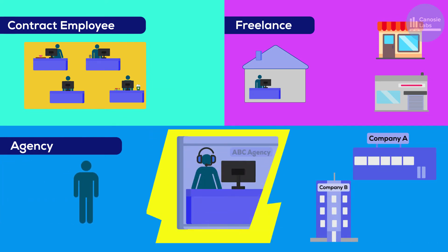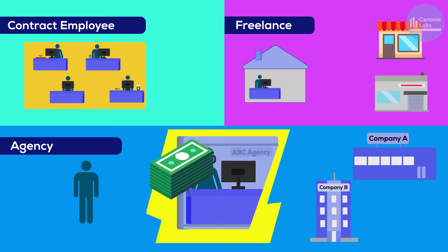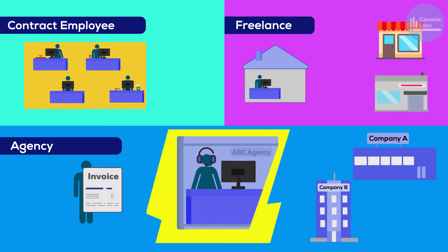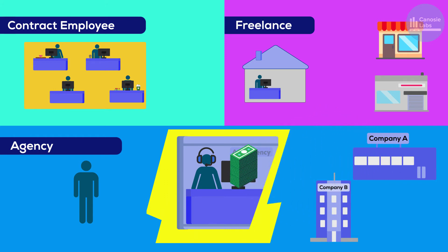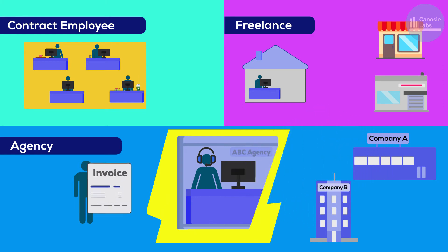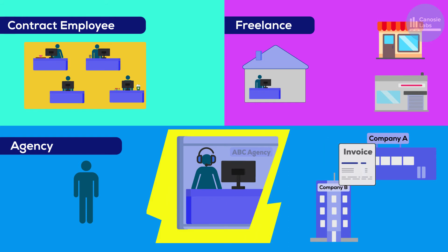Many organizations do not want to deal with dozens or even thousands of individual contractors. Therefore, they establish a relationship with a few selected vendors. These agencies then supply their clients with the required staff. In this form of contracting, you are one of the agency's subcontractors. You will still be interviewed by the agency's client, and if you get the job, your day-to-day work will be very similar to that of an independent contractor. One big difference comes during your invoicing period — you invoice the agency and not the organization you are working at, and the agency will mark up your rate and bill the client.